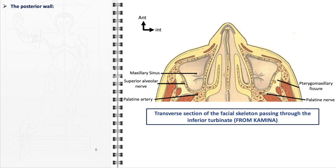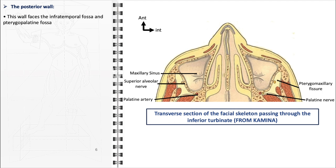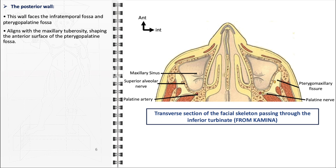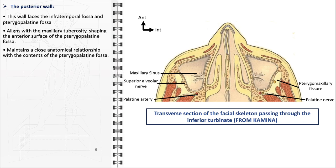The posterior wall of the maxillary sinus primarily faces the infratemporal fossa and the pterygopalatine fossa. It aligns with the maxillary tuberosity, contributing to the formation of the anterior surface of the pterygopalatine fossa. This close anatomical relationship is of paramount importance, especially considering the fossa's contents, which include critical neurovascular structures. The proximity of these structures to the posterior wall must be carefully considered in surgical procedures, as inadvertent damage could lead to serious complications.